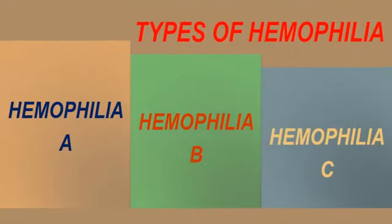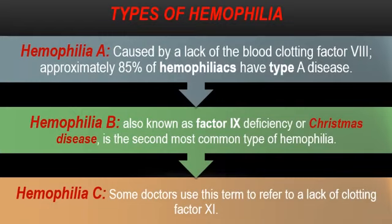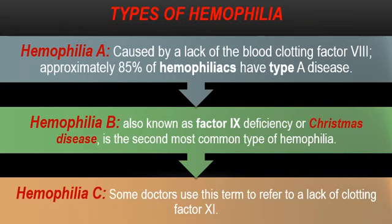There are three types of hemophilia: hemophilia A, hemophilia B, and hemophilia C. Hemophilia A is the most common type, occurring in approximately 85% of hemophiliacs, due to the lack of blood clotting factor number 8, the anti-hemophilic globulin factor. Hemophilia B is the second most common type, also known as factor 9 deficiency or Christmas disease. Hemophilia C occurs due to lack of clotting factor number 11.